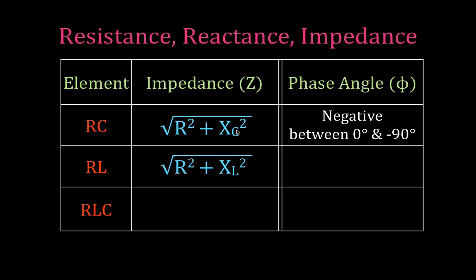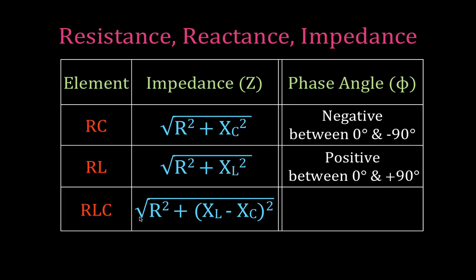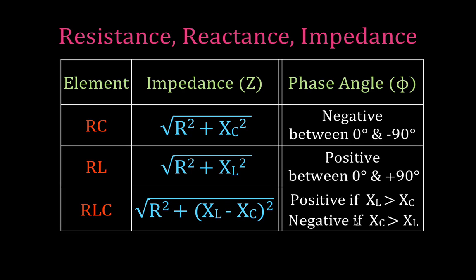For an RL circuit, we calculate the impedance as the square root of R² plus XL² — that's the resistance squared plus the inductive reactance squared. The phase angle is going to be positive, somewhere between 0 and positive 90 degrees, because the voltage leads the current. When we combine all three in an RLC circuit, the impedance is calculated as the square root of R² plus the quantity (XL minus XC) squared. If the inductive reactance is greater than the capacitive reactance, the phase angle will be positive. If the capacitive reactance is greater, the phase angle will be negative, still somewhere between 0 and 90 degrees.